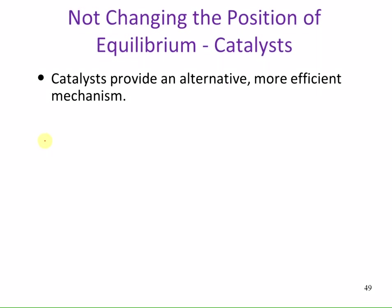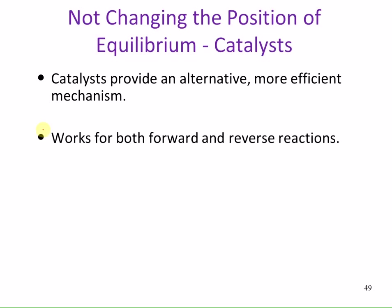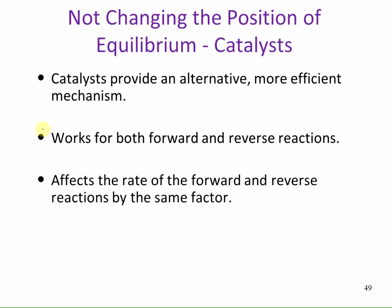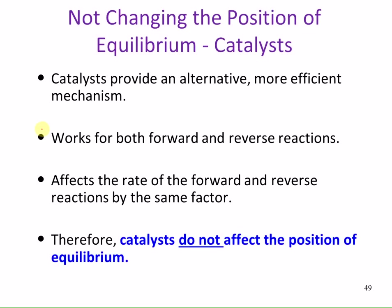A catalyst provides an alternative, more efficient mechanism for a reaction. It works for both forward and reverse reactions and affects the rate of the forward and reverse reactions by the same factor. Therefore, catalysts do not affect the position of equilibrium — they affect the rates of the reaction, but not the position of equilibrium.